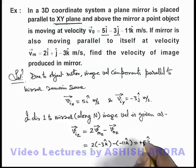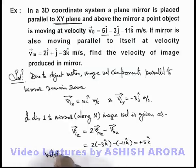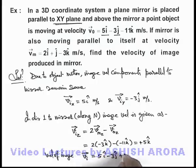So here we can write the velocity of image in this situation: vᵢ vector is equal to 5î - 3ĵ + 5k̂ meters per second. That will be the answer to this problem.